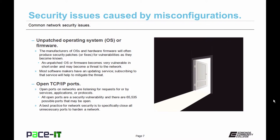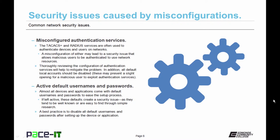TACACS+ and RADIUS services are often used to authenticate devices and users on networks. A misconfiguration on either may lead to a security issue that allows malicious users to be authenticated to use network resources. Thoroughly reviewing the configuration of authentication services will help mitigate the problem. In addition, all default local accounts should be disabled, as these may present an opening for a malicious user to exploit authentication services.